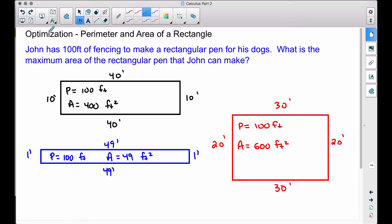Optimization in calculus often times you're trying to maximize or minimize something. In this example, John has 100 feet of fencing to make a rectangular pen for his dogs. What is the maximum area of the rectangular pen that John can make? I have three examples of rectangles using 100 feet of fencing.